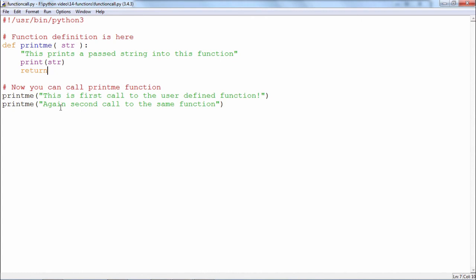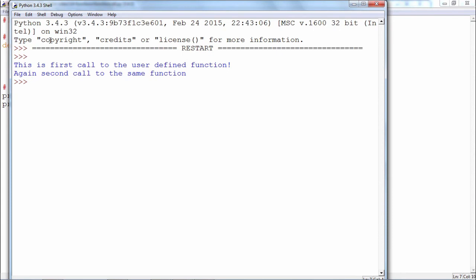When we run it, the two strings will be one by one accepted by the printme function and printed out. Let us run and see how it works. There you go—the two calls to the printme function are executed.